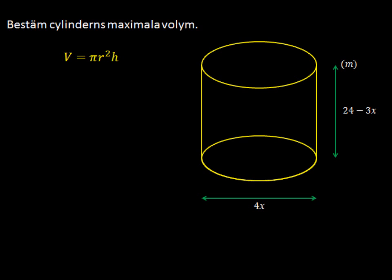So this is the cylinder that we have. We are given the diameter, and that's 4x, and then we're given the height, which is 24 minus 3x. And of course, you remember from before, that is the standard equation when we try to find the volume of a cylinder.